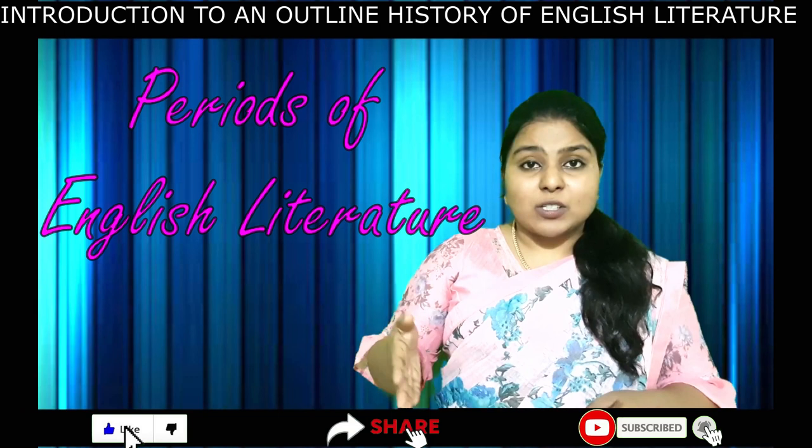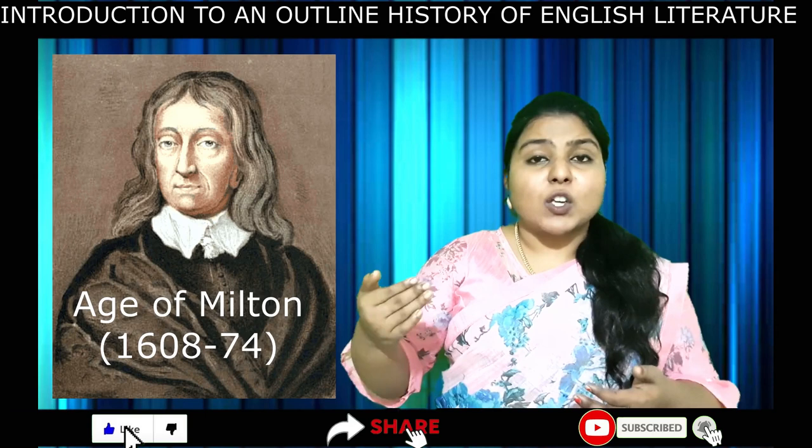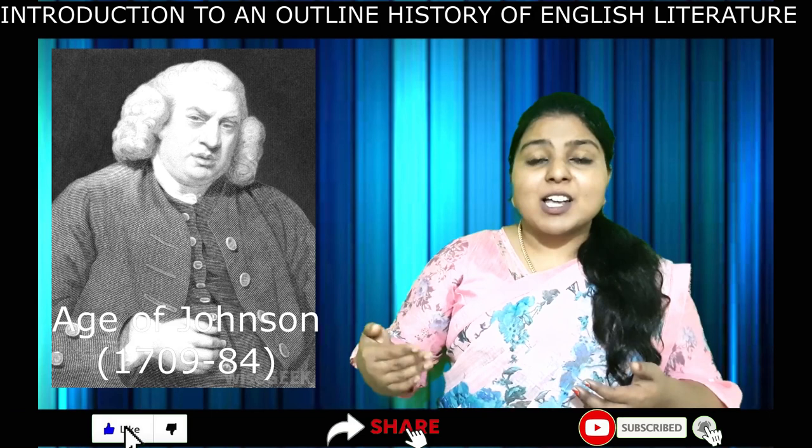The fifth concept is the periods of English literature. In this book, these ages — like the Elizabethan age, Restoration age, the Romantic age, Victorian age — are named after the genius author of that age. So you will see here the Age of Chaucer, Age of Shakespeare, Age of Milton, Age of Dryden, Age of Pope, Age of Johnson, Age of Wordsworth, Age of Tennyson. These authors you will learn in detail.